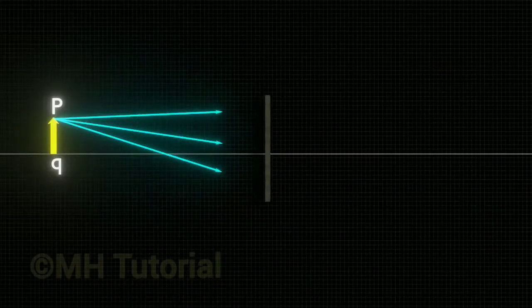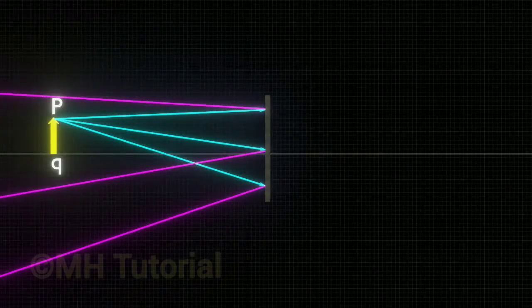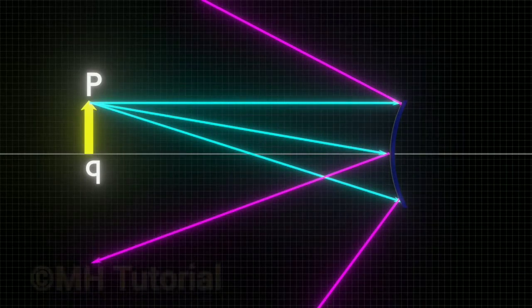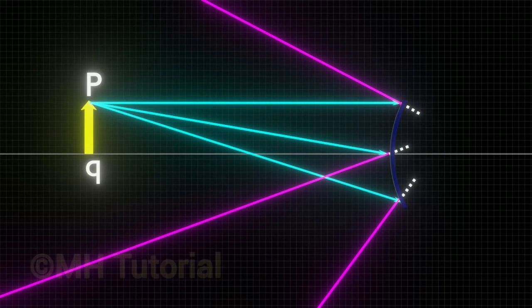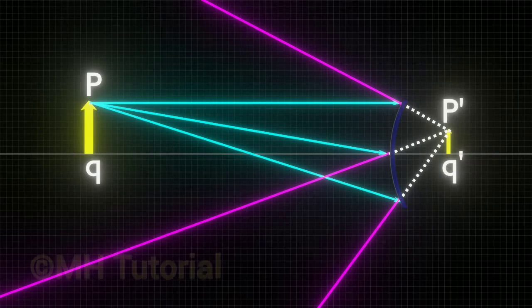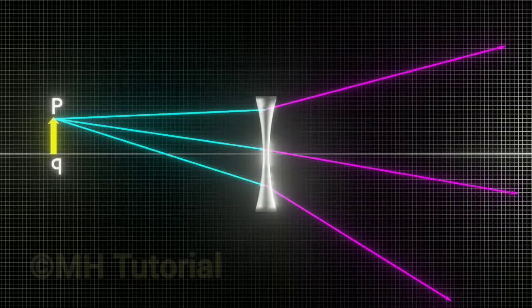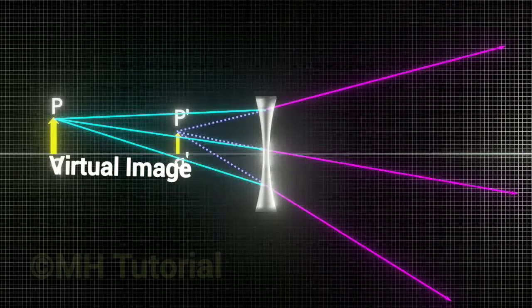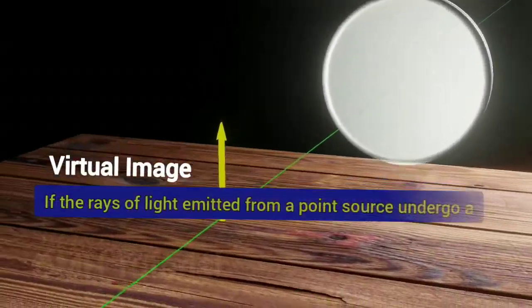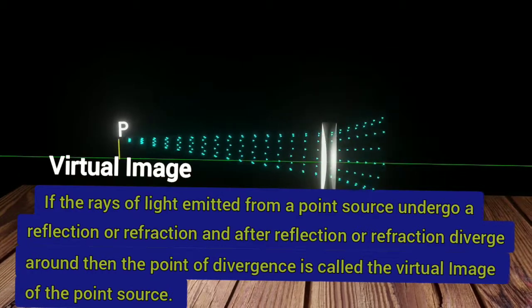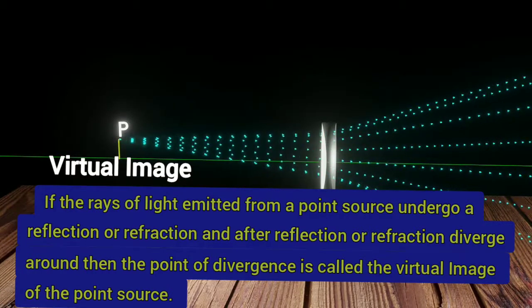What is a virtual image? In situation 1 with the plane mirror, situation 2 with the convex mirror, and situation 3 with the concave lens, we saw that the rays are not converging but diverging instead. If you inspect the trajectories of the reflected or refracted rays, you may find a second point from which the rays appear to be coming out. This second point is the virtual image — it is an imaginary point. Therefore: if rays emitted from a point source undergo reflection or refraction and after that diverge, then the point of divergence is called the virtual image of the point source.